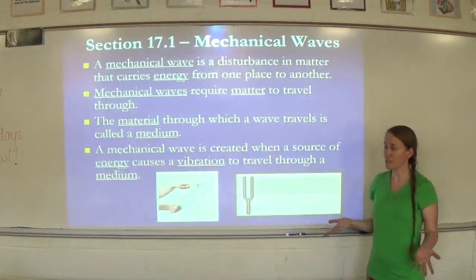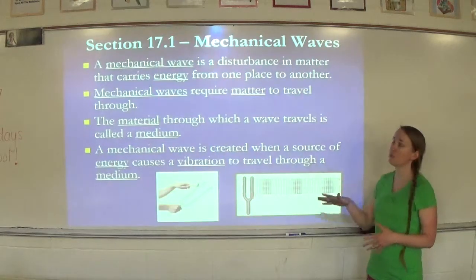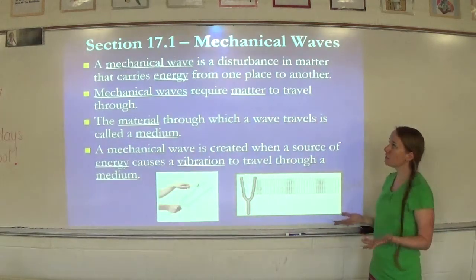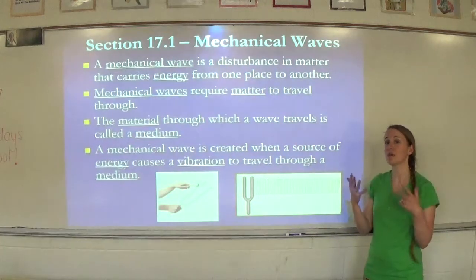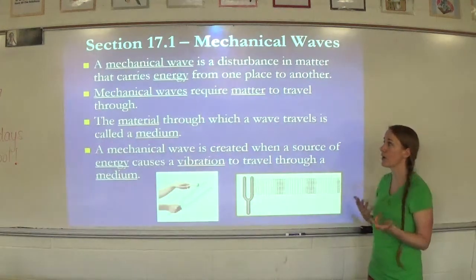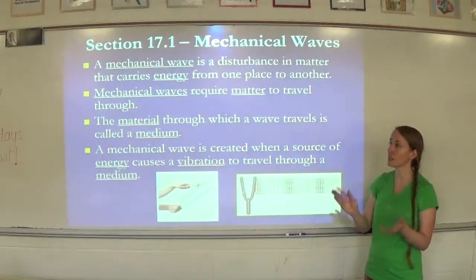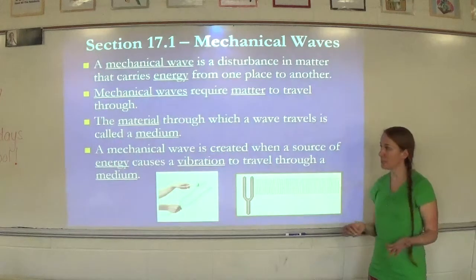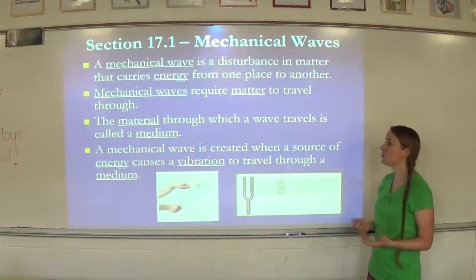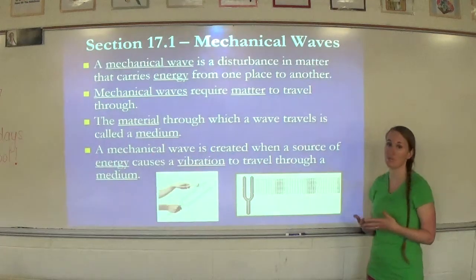So mechanical waves, what is it? A mechanical wave is a disturbance in matter that carries energy from one place to another. Mechanical waves require matter to travel through. Later we'll learn about electromagnetic waves, and they don't require matter. The material through which a wave travels is called a medium, and a mechanical wave is created when a source of energy causes a vibration to travel through a medium.